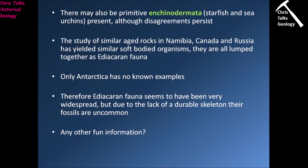There may also have been primitive Echinodermata — starfish and sea urchins — within the Ediacaran fauna, although there is more disagreement about those fossils. Study of similar-aged rocks from Namibia, Canada, and Russia has yielded similar soft-bodied organisms, all classified as Ediacaran fauna. We have examples from every continent with the exception of Antarctica, telling us these animals were clearly very widespread and quite a successful group. Due to their lack of a hard skeleton, fossils are on the whole relatively rare.